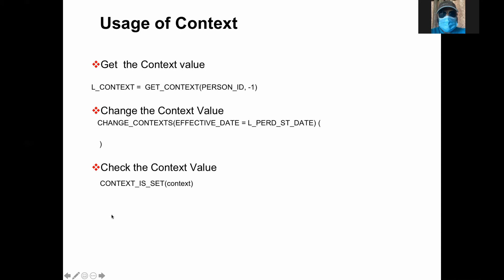You can also check whether a particular context is set. If you are getting the context, you can check it — it basically returns Y or N. There is no boolean in Fast Formula, so it is always Y or N. This is how you can validate that the context is set.